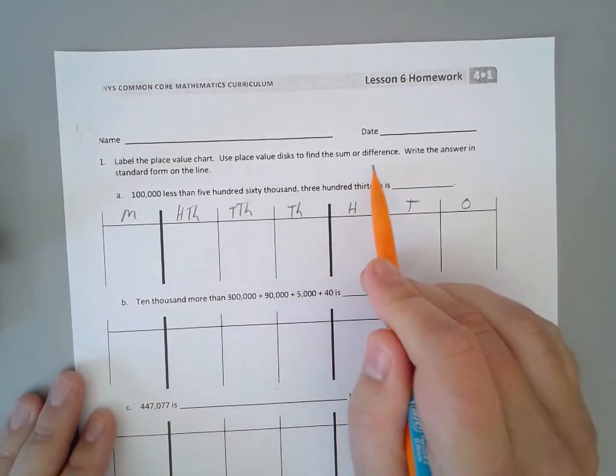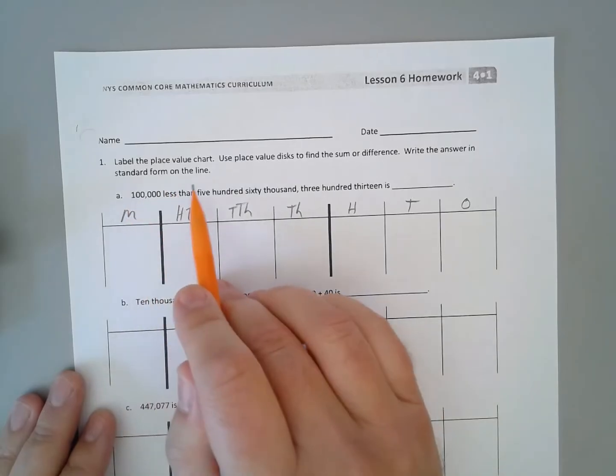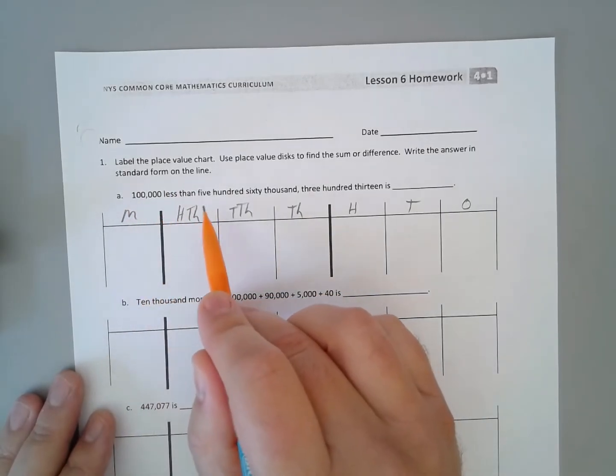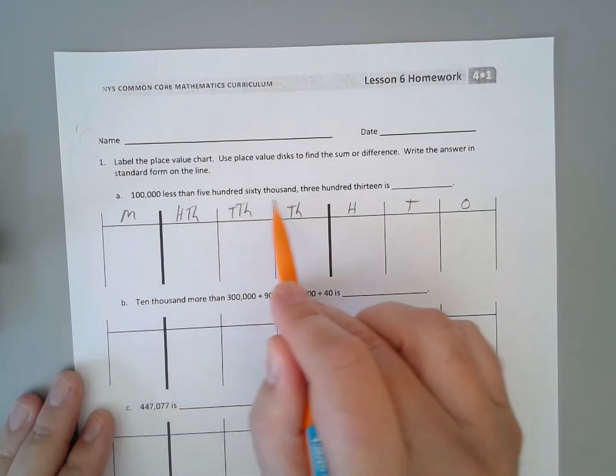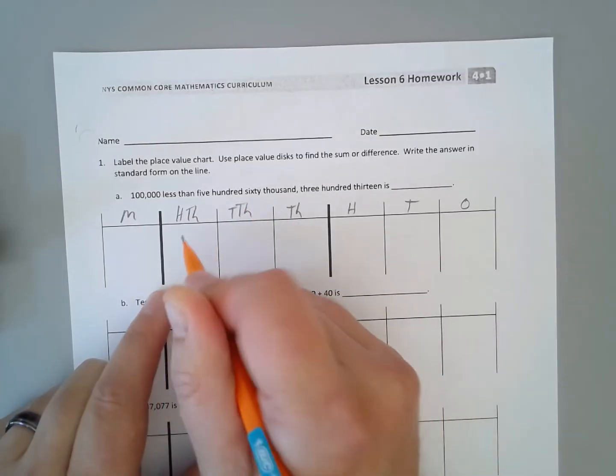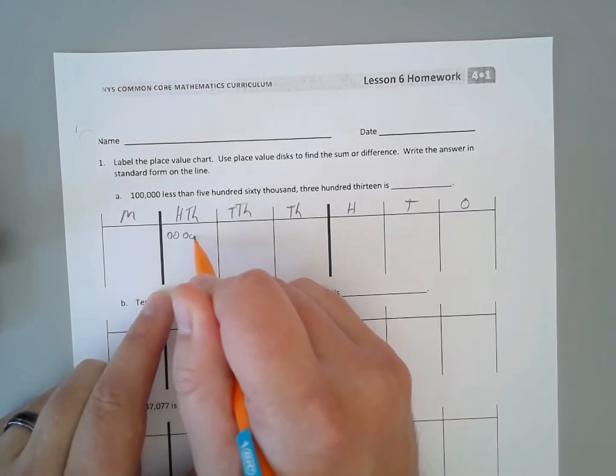Use place value disks to find the sum or difference. Write the answer in standard form on the line. 100,000 is less than, or 100,000 less than 560,313. So we have 560,000. 1, 2, 3, 4, 5.